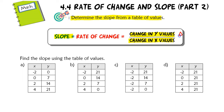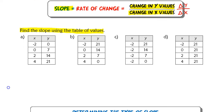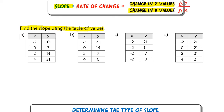We use that triangle symbol — change in y over change in x. So when it asks you to find the slope using a table of values, it's really just asking you to find the rate of change. We're going to find the change in the y values. In the first example, the y values are all increasing by 7, so the change in y is 7. The change in x is increasing by 2, so the slope here is 7 over 2.